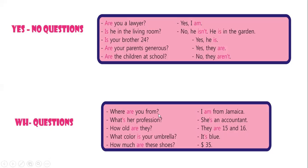WH questions: Where are you from? I am from Jamaica. What's her profession? She's an accountant. How old are they? They are 15 and 16. What color is your umbrella? It's blue. How much are these shoes? 35 dollars.